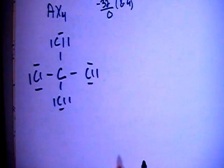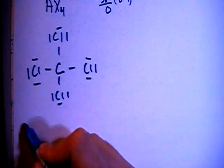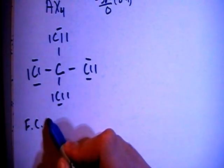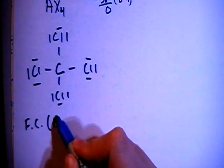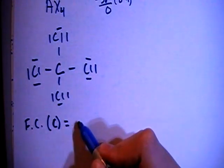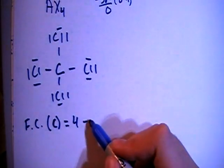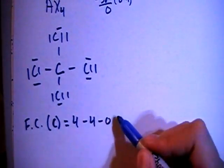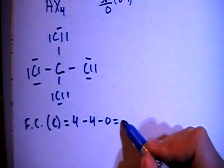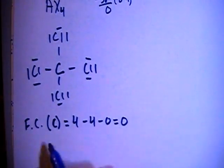Let's go ahead and verify by calculating the formal charges. The formal charge on the carbon, which is the central atom, is going to be four valence minus one, two, three, four bonds, minus zero non-bonding electrons for a total of zero. That's good.